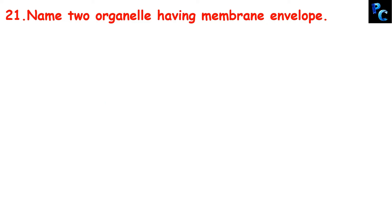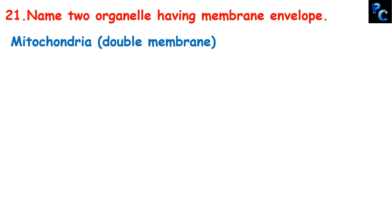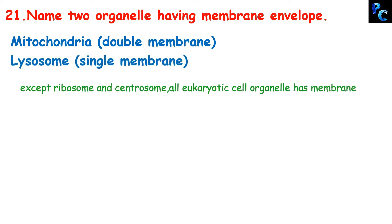Name two organelles having a membrane envelope. Mitochondria, which has a double membrane, and lysosome, which has a single membrane. Basically all organelles in eukaryotes have an envelope or membrane.